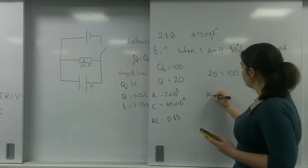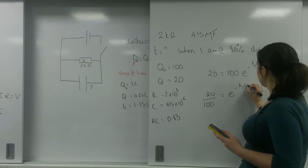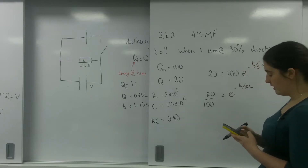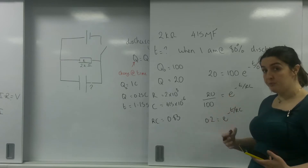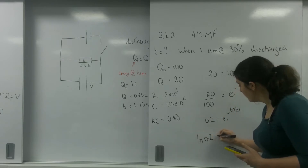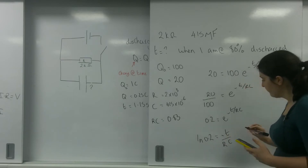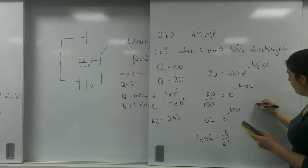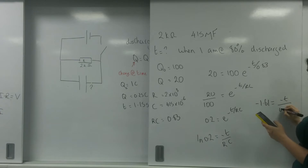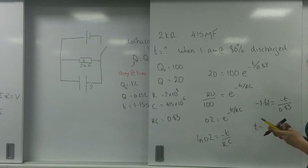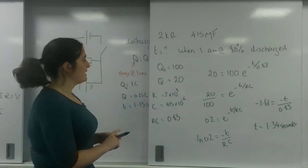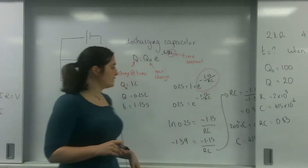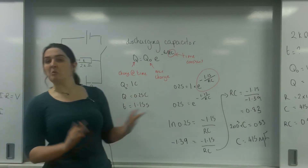Getting the exponential on its own: 20 over 100 equals E to the minus T over 0.83, so 0.2 equals E to the minus T over RC. Taking the natural log of both sides cancels out the E, giving minus 1.61 equals minus T over 0.83. Therefore T equals 1.34 seconds. This makes sense — it took 1.15 seconds to reach 25% remaining, and slightly longer, 1.34 seconds, to reach 20% remaining.